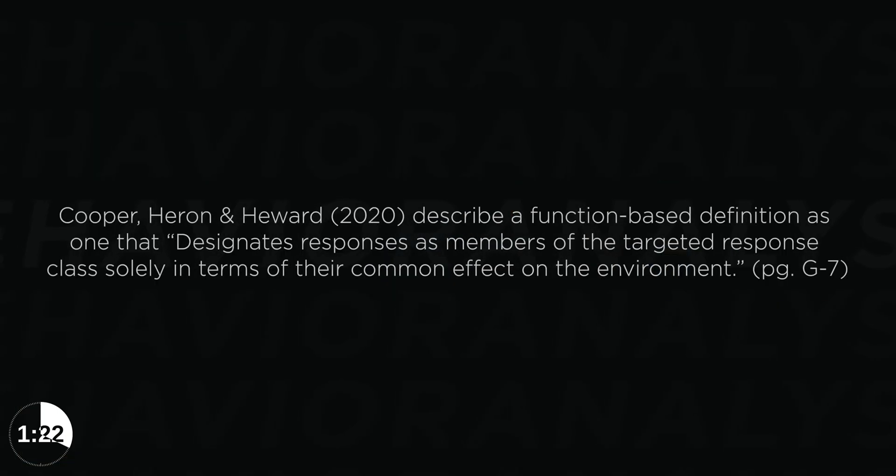But for all of this behavior, there is one simple definition that helps guide or steer you towards finding out why a particular behavior that you engage in keeps occurring or doesn't. Said another way, you can take this definition and understand why your behavior is occurring and how to influence it. Cooper, Heron, and Hewitt in 2020 describe a function-based definition as one that designates responses as members of the target response class solely in terms of their common effect on the environment. That's how we classify these things.